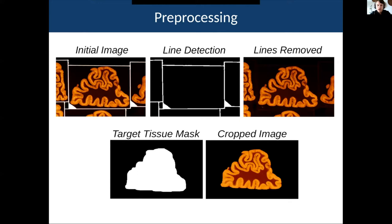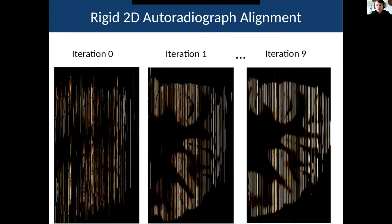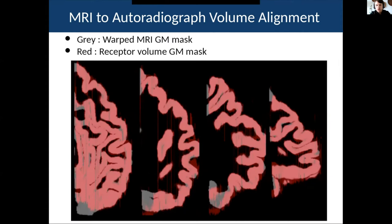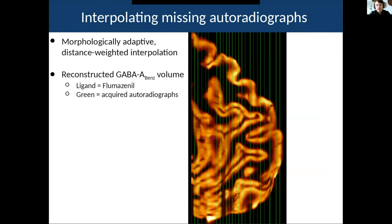I came up with a series of steps to address these challenges. The first is to pre-process the images to isolate the target piece of tissue from the autoradiograph — this involved training a U-Net to do line detection and then using standard computer vision techniques. The next step is to align the autoradiographs to one another, aligning each to its neighbors — so you could be aligning a GABA section to a glutamate section. Once you have an initial reconstruction within a given slab, you can align it to the donor's MRI. From there, I implemented a technique to interpolate between missing sections for a given receptor type, to fill in the gaps between particular sections.